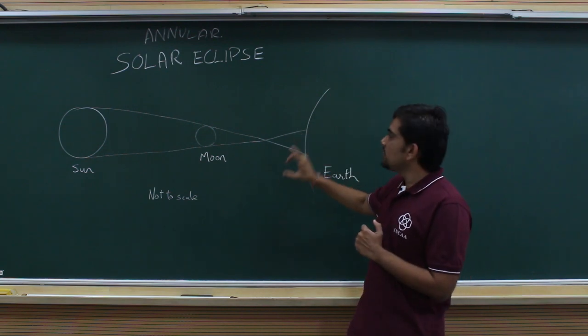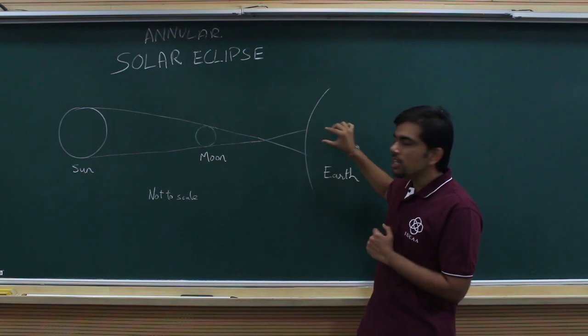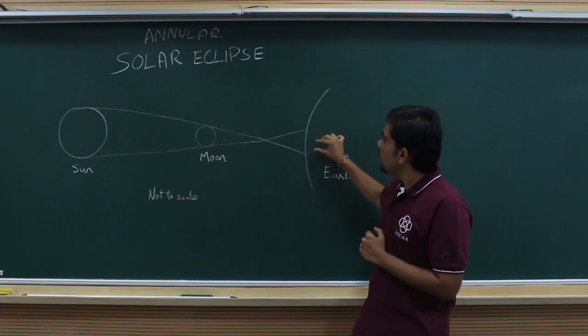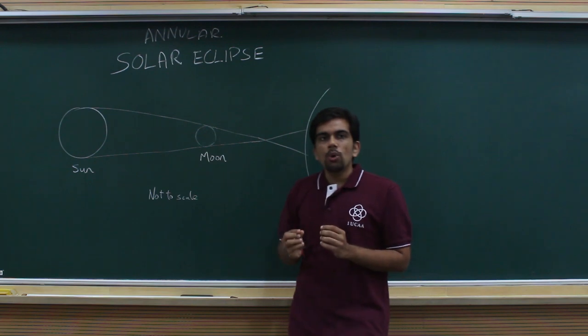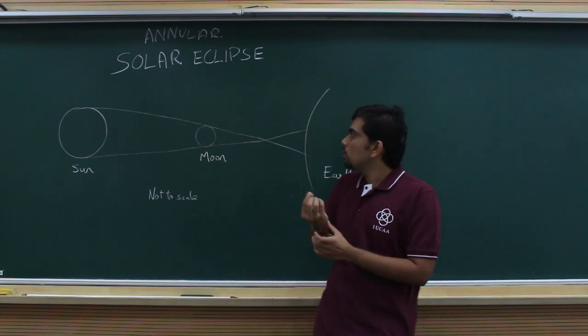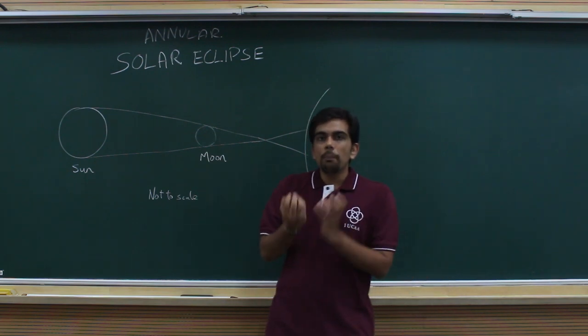Note that this diagram is not to scale, but it forms a very small cone on the surface of the Earth. In this small cone, we see the totality or the complete annular eclipse.